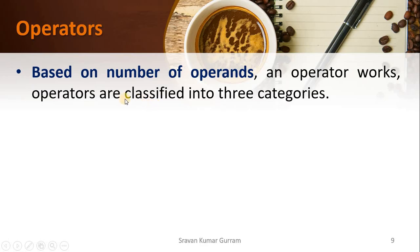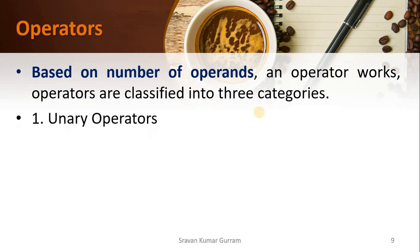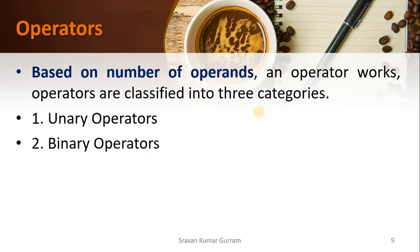Based on the number of operands an operator works on, operators are classified into three categories: unary operators, binary operators, and ternary operators.